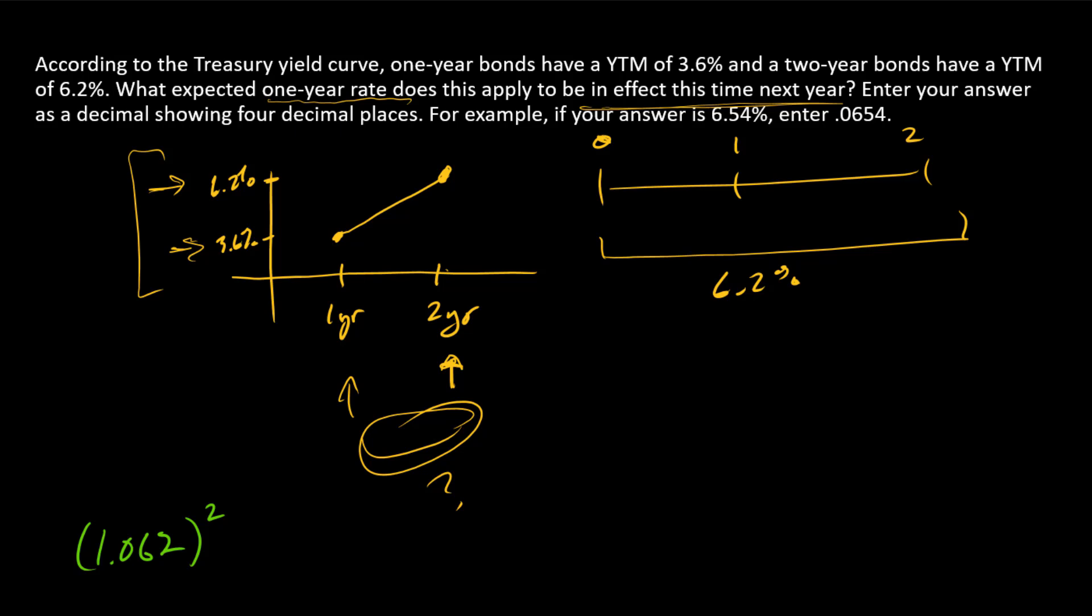The alternative way is you invest the first year at 3.6%, as we see on the yield curve, and then invest the second year at something else. We don't know what this is going to be, but expectations theory tells us that this number in combination with this tells us what that expectation is.